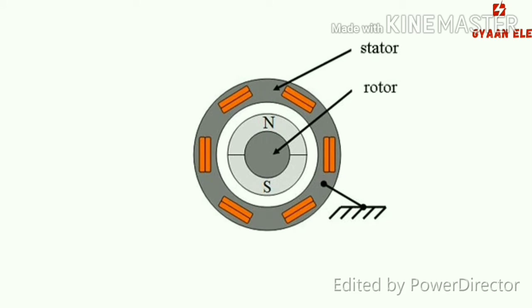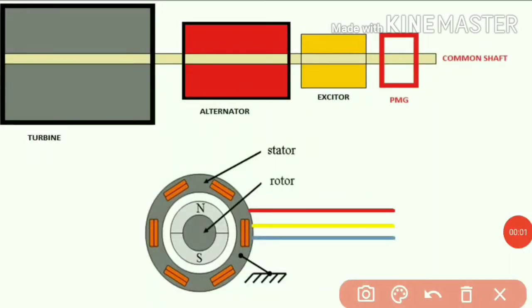And the next is stator of permanent magnet generator. The stator of PMG is same as induction motor stator, simply made up of frame, magnetic core, and three-phase winding. It's a three-phase stator winding. So guys, now let us see the working principle of permanent magnet generator.